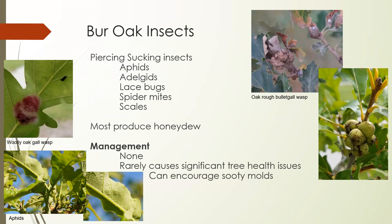Bur oaks also get piercing-sucking insects — this is why people don't want to park their cars underneath bur oaks in communities. They have true bugs with piercing-sucking mouthparts that suck sap out of tree leaves and produce honeydew, which gets all over your car and is hard to get off. This includes aphids, adelgids, lace bugs, spider mites, and scales. These almost never cause significant damage to trees but can encourage sooty mold.